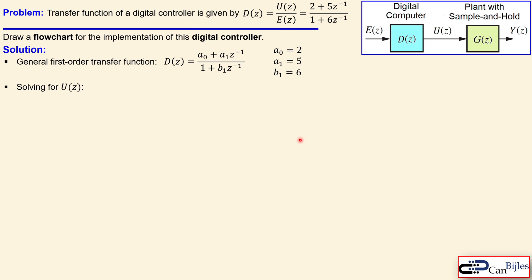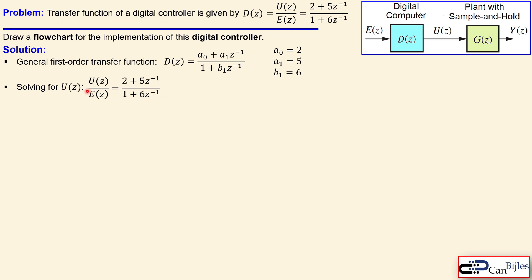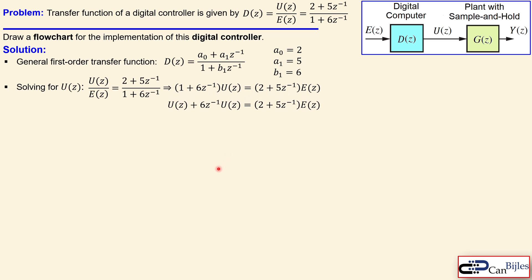Now in order to get the expression for U(z), we can solve this by cross multiplication. If I bring it here and cross multiply, that means U(z) times the denominator on the right hand side is equal to E(z) times the numerator on the right hand side, as shown here. In order to get an expression for U(z) only, we work out the parentheses on the left side and keep the right side, giving this expression. Then we bring the second term on the left side to the right hand side.